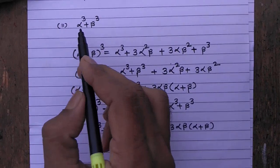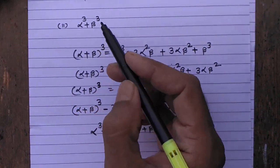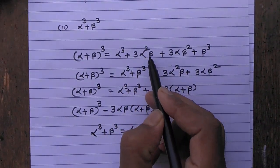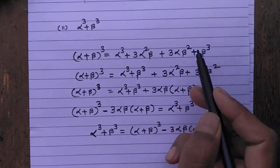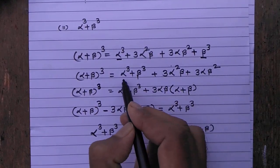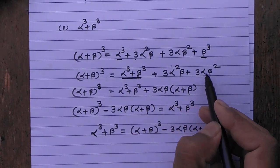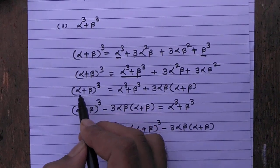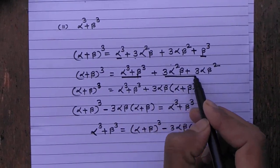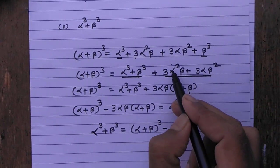In some examples, alpha cube plus beta cube is asked. If a cube is there, it is prepared from the identity: alpha plus beta whole cube is equal to alpha cube plus 3 alpha square beta plus 3 alpha beta square plus beta cube. We need to extract alpha cube plus beta cube from this expansion, taking 3 alpha beta as common from the remaining terms.